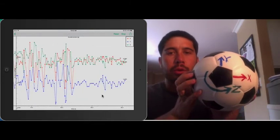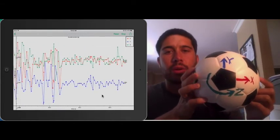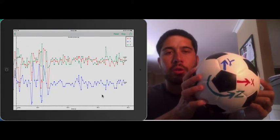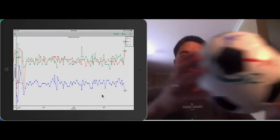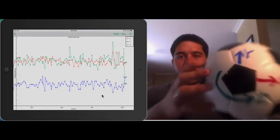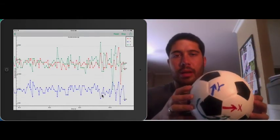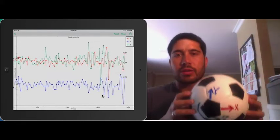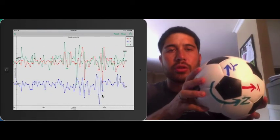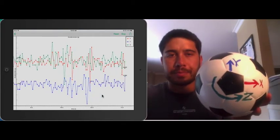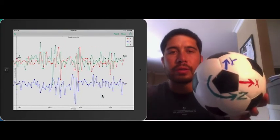And the beauty of having these three values is that we can represent the motion of the ball in any direction. So any translation that will happen, any acceleration that occurs, we have enough data to represent that motion. Okay, so that's translation.